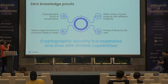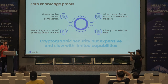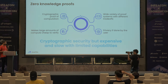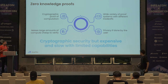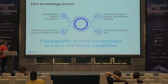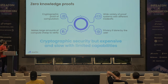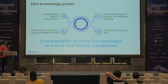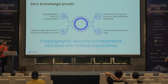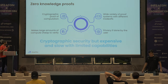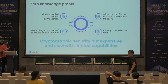One option is ZK proofs — it's an algorithmic proof of computation. It supports a wide variety of proof systems on different trade-offs, which include proof sizes, proving times, and what's prioritized. If done well, it basically gives you privacy for free. The primary goal is to make it cheap to verify your computation. So ZK proofs provide cryptographic security, which is the highest level you can get. But they can be pretty expensive and pretty slow.